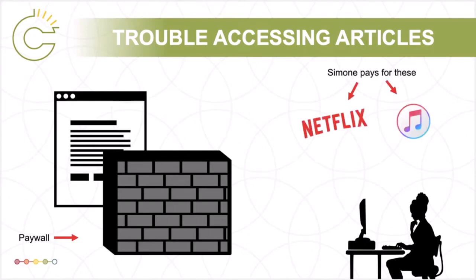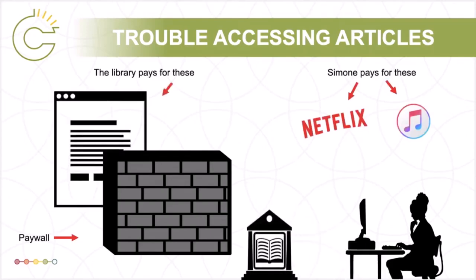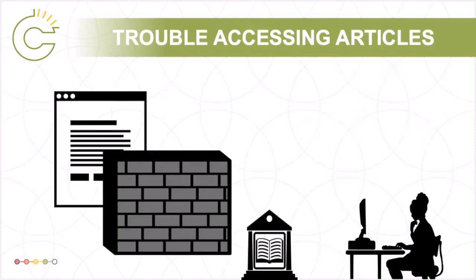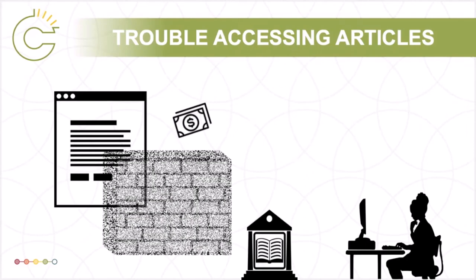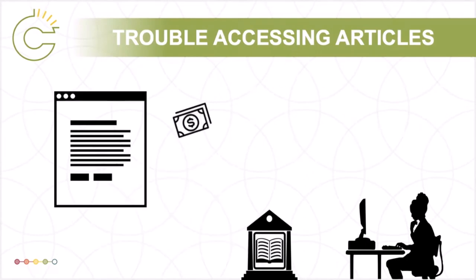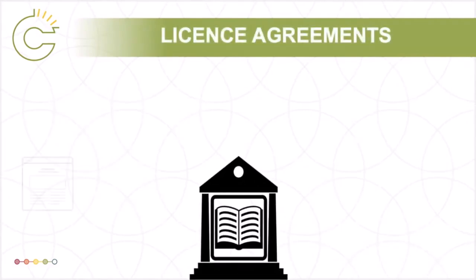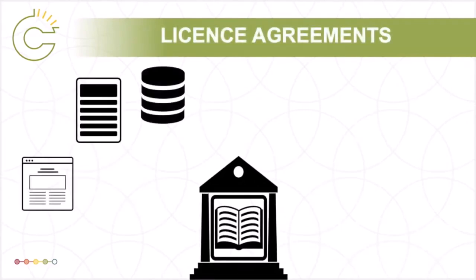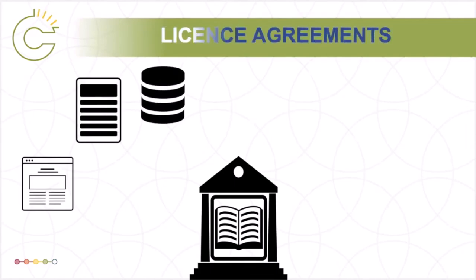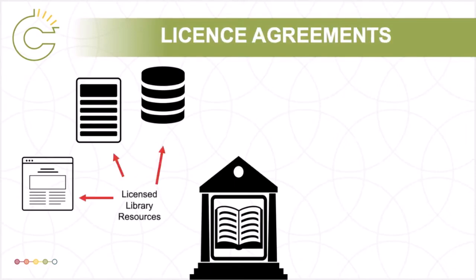When it comes to academic articles, books, and streaming media, however, the library is usually the one paying to access the content, and that access is generally restricted to students and other members of the university community. The TA's link to the article likely would have worked if Simone were connected to the university's computing network, whether on campus or remotely. Academic libraries purchase or subscribe to a wide range of electronic journals, e-books, and databases from commercial vendors. Because libraries sign license agreements that enable access to these things, they are usually called licensed library resources.